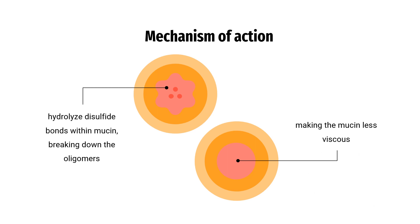Mechanism of action. A number of possible mechanisms for the mucolytic activity of acetylcysteine have been proposed. Acetylcysteine sulfhydryl groups may hydrolyze disulfide bonds within mucin, breaking down the oligomers and making the mucin less viscous. Acetylcysteine has also been shown to reduce mucin secretion in rat models. It is an antioxidant in its own right, but is also deacetylated to cysteine, which participates in the synthesis of the antioxidant glutathione. The antioxidant activity may also alter intracellular redox reactions, decreasing phosphorylation of EGFR and MAPK, which decrease transcription of the gene MUC5AC, which produces mucin.